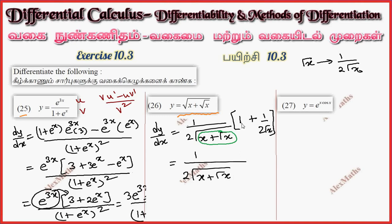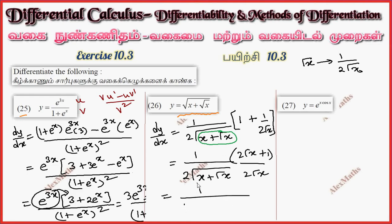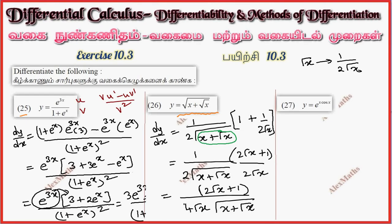If we take the LCM, we have 2 root x. So the numerator becomes 2 root x plus 1, and we multiply through. So 1 by 1, numerator 2 root x plus 1, divided by 4 root x — that is the root of x plus root x. That is the answer.